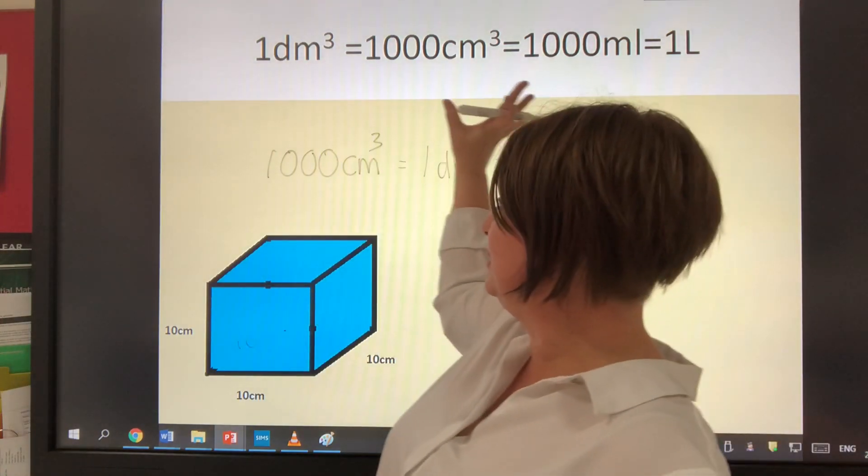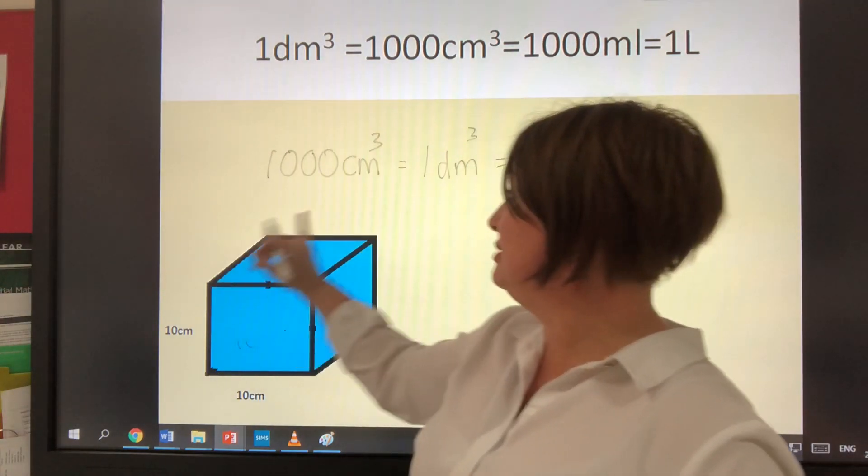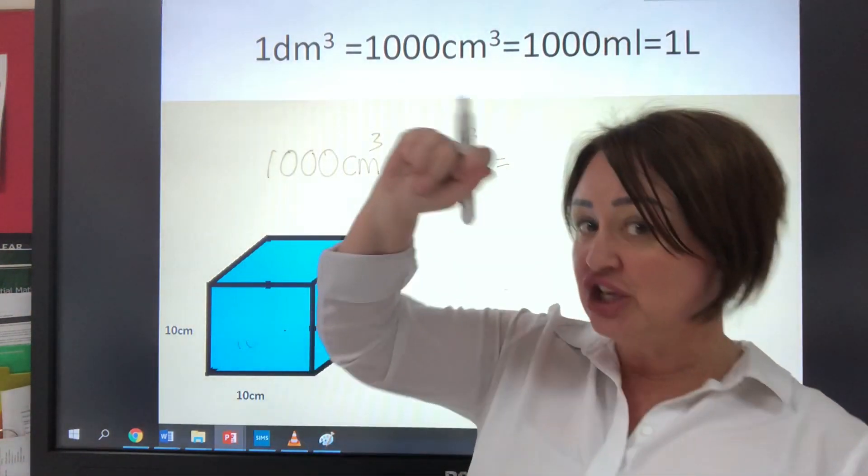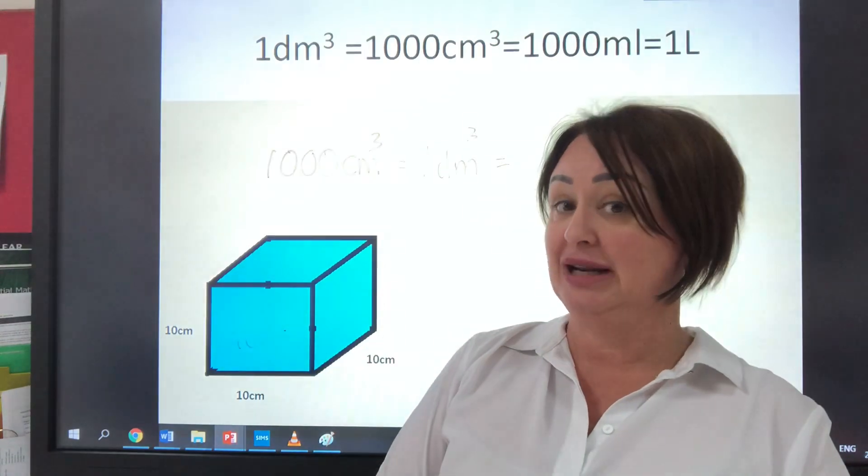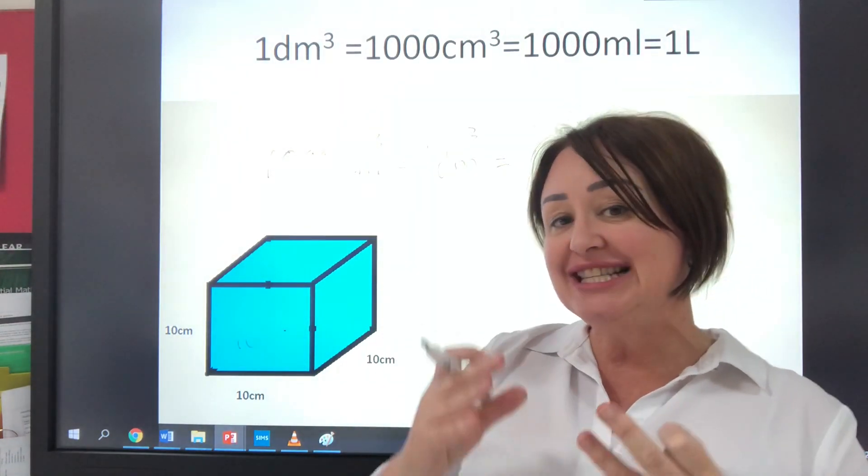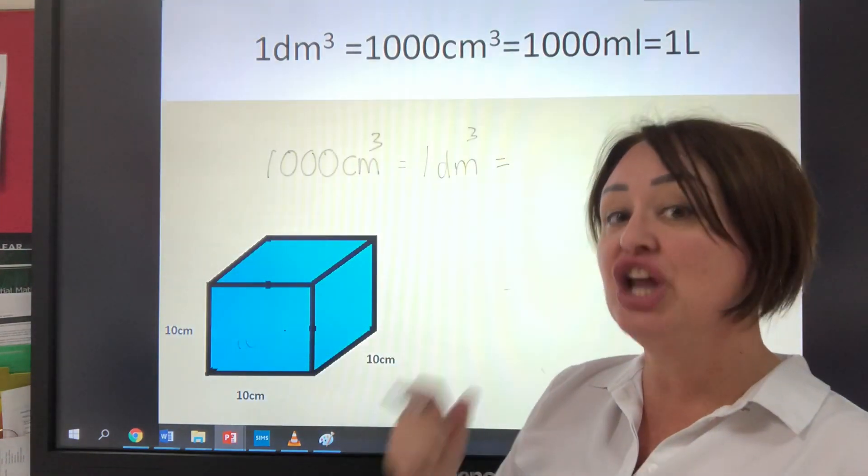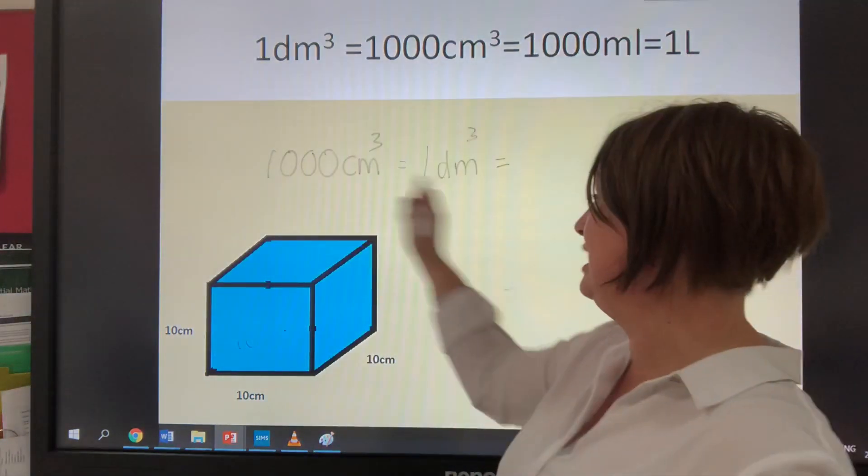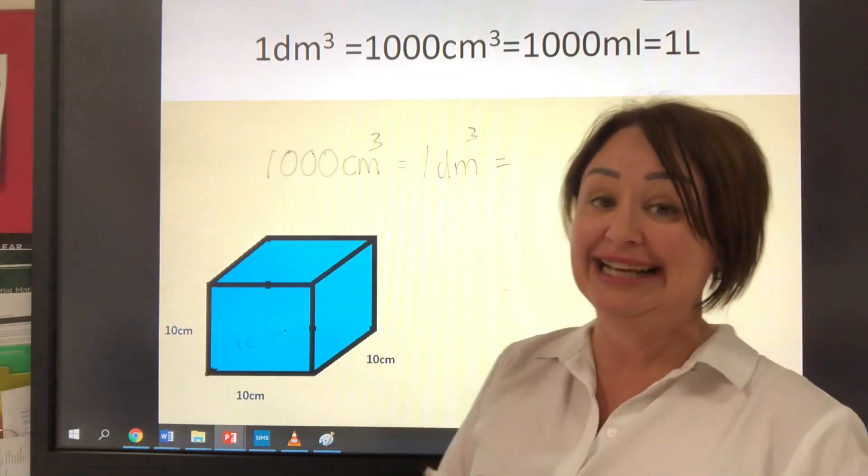So how do we say that a centimetre cubed is a milliliter? And why don't we have the number three superscript on the milliliter? Well, the fact that it says litre denotes it's a volumetric measurement. It's not a linear measurement as seen here.